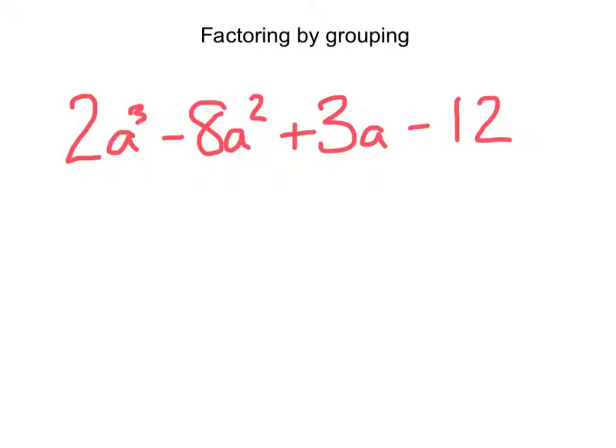This is factoring by grouping. You'll notice when you have a problem like this, you have about four terms in it. A lot of times there aren't any common factors, so we need to break this down into two groups that we can find common factors for.